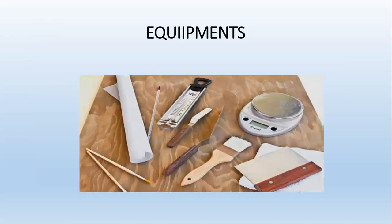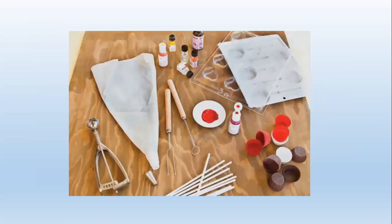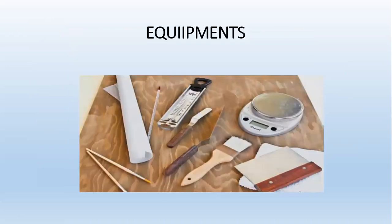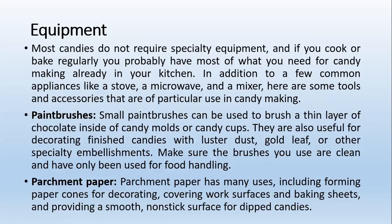Now let's discuss the equipment used in candy making. Most candies don't require specialty equipment — if you cook or bake regularly, you probably have most of what is needed. In addition to common appliances like a stove, microwave, and mixer, some additional tools are useful. Small paint brushes can be used to brush a thin layer of chocolate inside candy molds or candy cups, and are also useful for decorating finished candies with luster dust, gold leaf, or other specialty embellishments. Make sure brushes used are clean and dedicated for food handling only. Parchment paper has many uses including forming paper cones for decorating, covering work surfaces and baking sheets, and providing a non-stick surface for dipped candies.